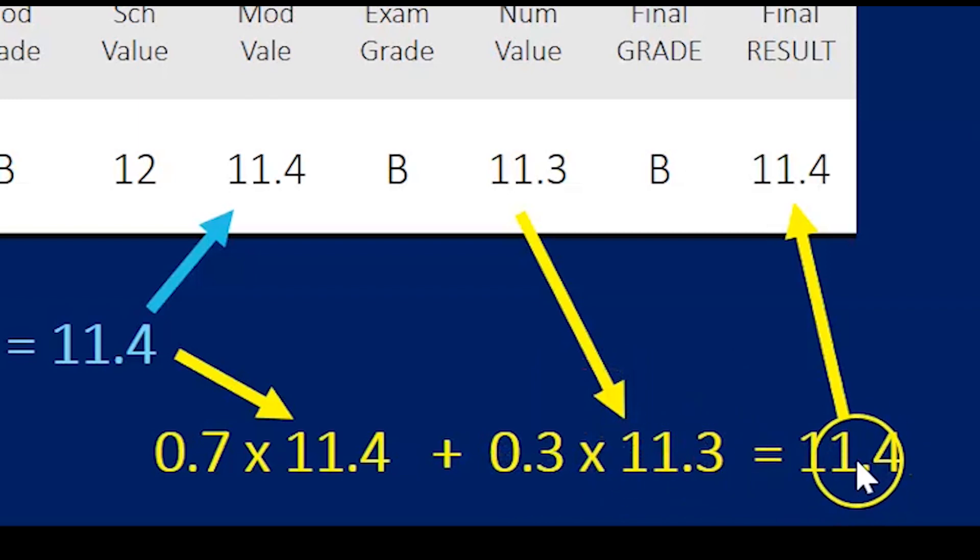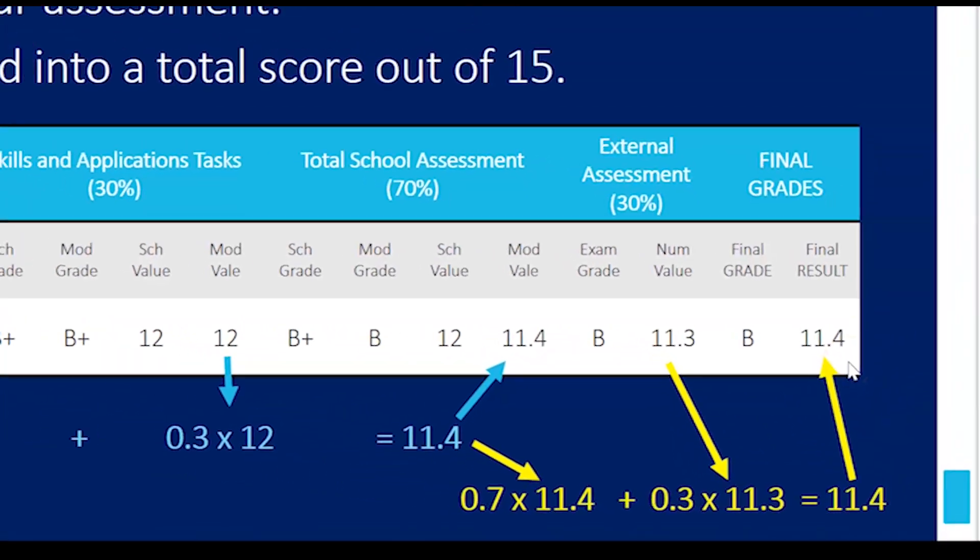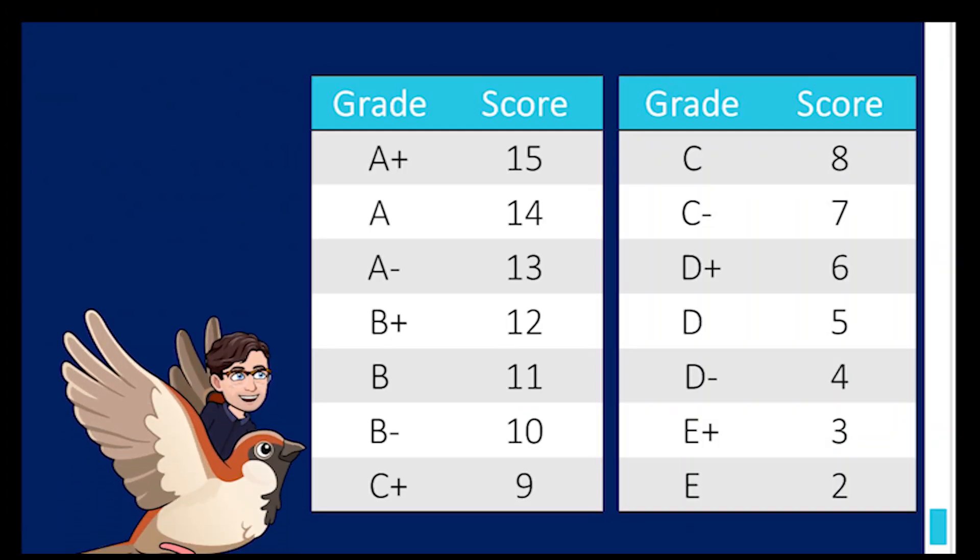That's calculated by averaging 70% of your schoolwork with 30% of the external assessment to give you a numerical value of 11.4, and 11.4 sits at a B grade. Now if you're trying to work out how we get those numbers...